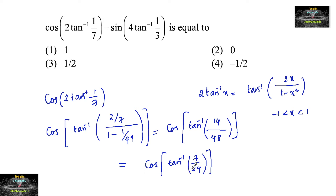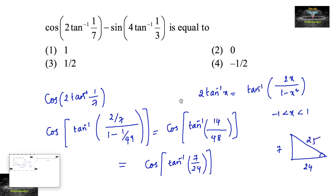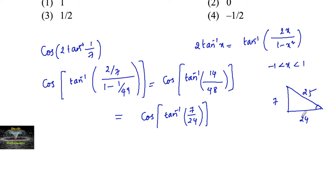Now we need to convert tan⁻¹(7/24) into cosine. Consider a right-angle triangle where tan = opposite/adjacent = 7/24. Since 7, 24, and 25 are Pythagorean triplets, the hypotenuse is 25. For cosine we take adjacent/hypotenuse = 24/25, so this equals cos(cos⁻¹(24/25)) = 24/25. Mark this as result 1.